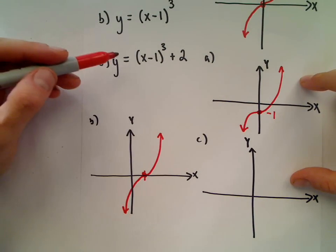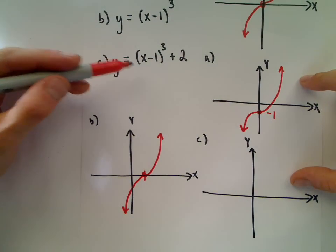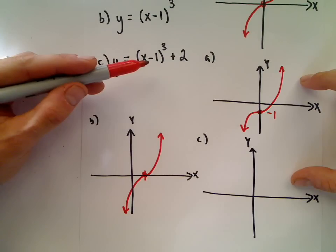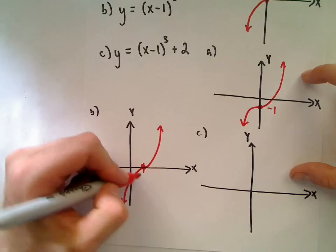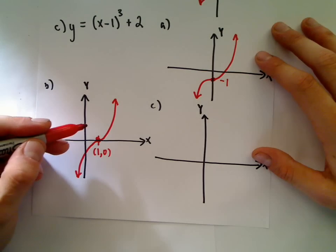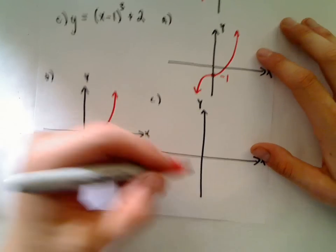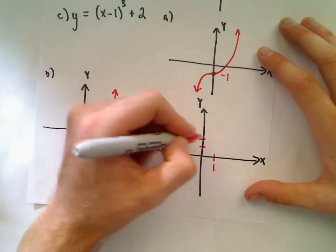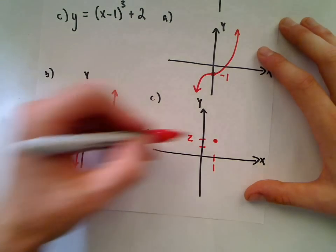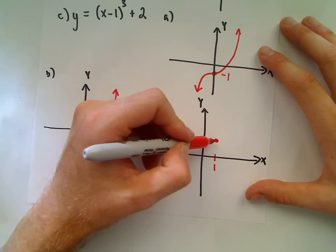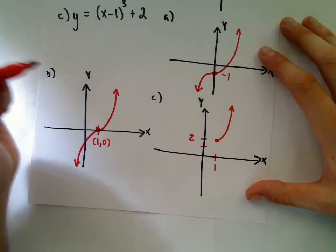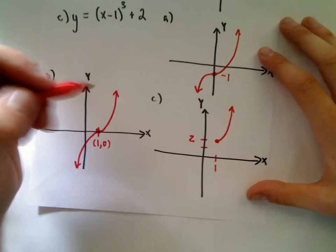For (x-1)³ + 2, the minus 1 shifts it right one unit and the plus 2 shifts it up two units. I take my part b graph and move it up two units. The point that was at (1, 0) moves to (1, 2), and it still has the same basic shape.